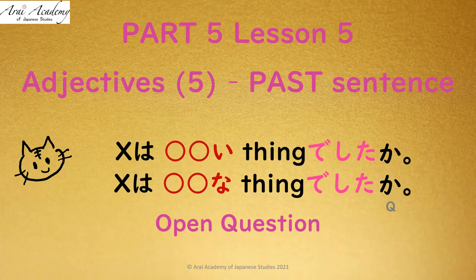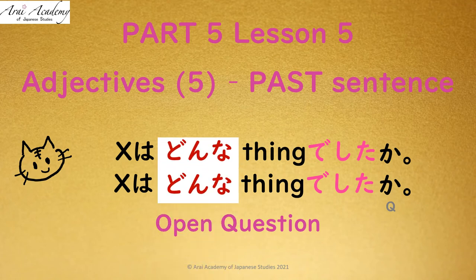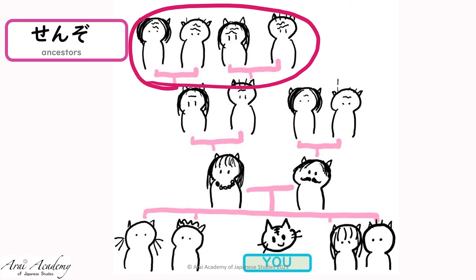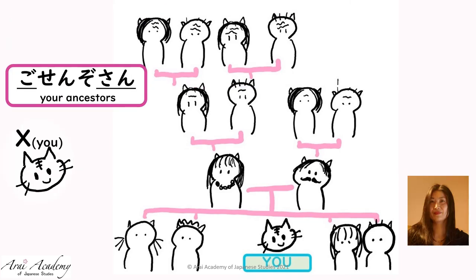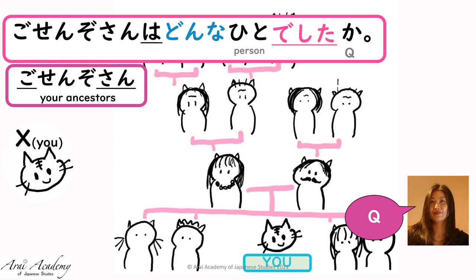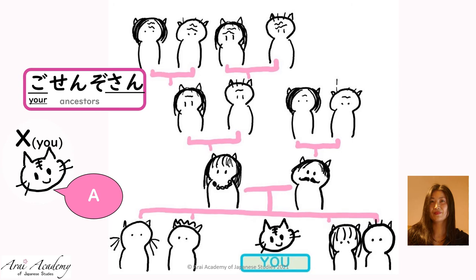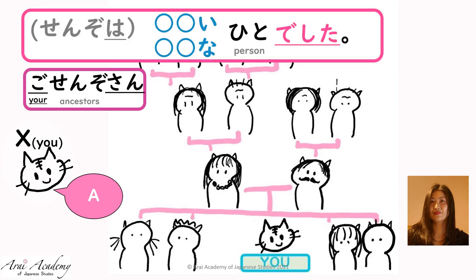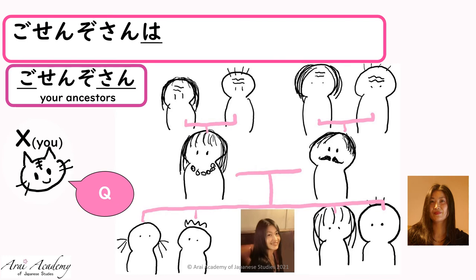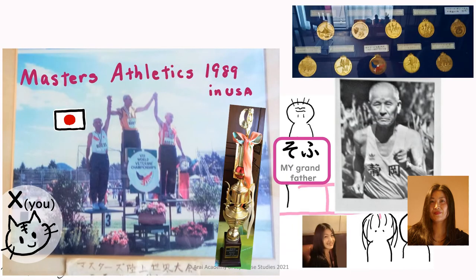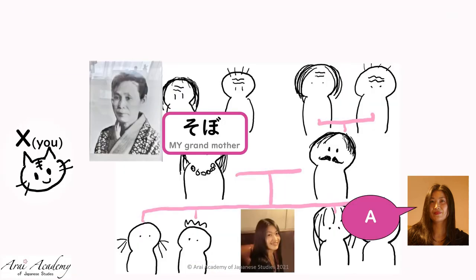For the open question part, remember the question word donna is used before a thing. Let's talk about senzo — ancestors. I say go-senzo-san to show respect to your ancestors. Hito means people or person. I'll ask: Go-senzo-san wa donna hito deshita ka? Answer with a description plus hito deshita. Remember, you say senzo when talking about your own side. Now ask me about my ancestors. Yes — Go-senzo-san wa donna hito deshita ka? Sofu wa yumei na hito deshita. Sobo wa yumei na hito ja nakatta desu — yasashii hito deshita.